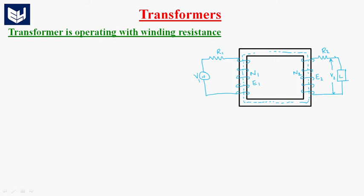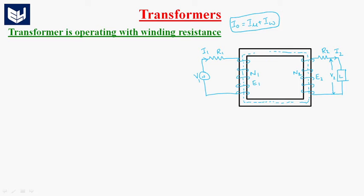Let us assume I2 is the current flowing through secondary winding and I1 is the current flowing through primary winding. Here, we are neglecting the no-load component of current I0 for convenience. I0 is equal to Imu plus Iw — the magnetizing component of current plus the iron loss component of current. This I0 is 5 to 8 percent of full load current, so we are neglecting it.